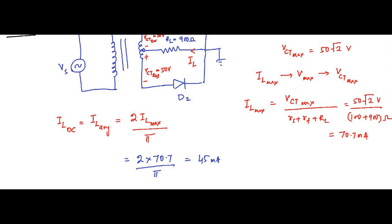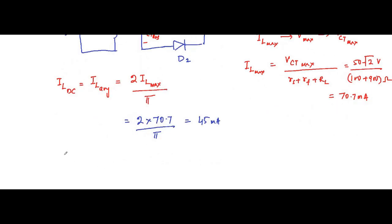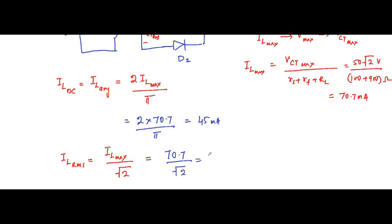Similarly, the RMS value I_L_RMS equals I_L_max divided by √2. So that will be 70.7 milliampere divided by √2, which equals 50 milliampere.